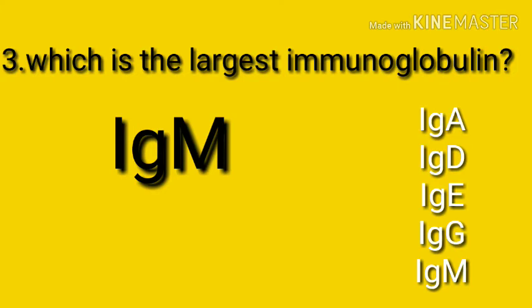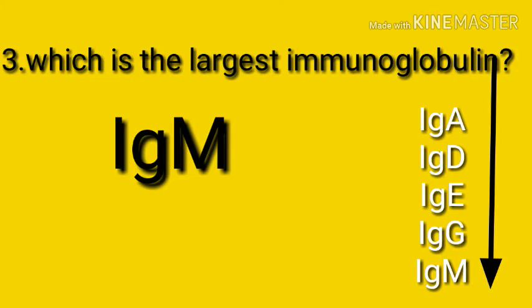From top to bottom in alphabetical order, M is the largest one. By that we can memorize that immunoglobulin M is the largest immunoglobulin.